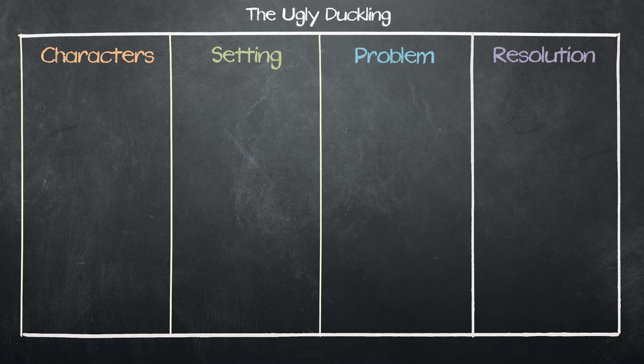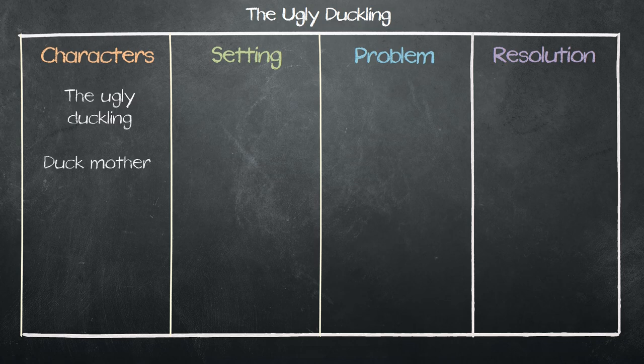Ask the students to identify the main characters in the story. Write their answers in the characters box. The Ugly Duckling, the Duck Mother, and the Ugly Duckling's brothers and sisters.